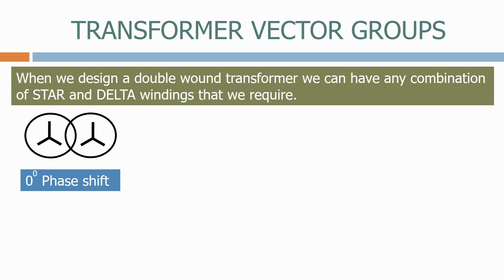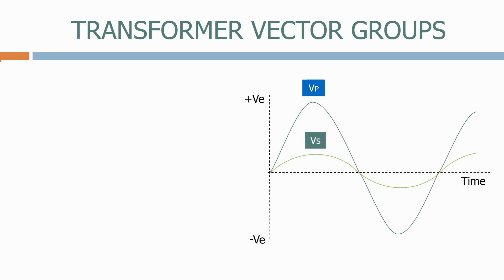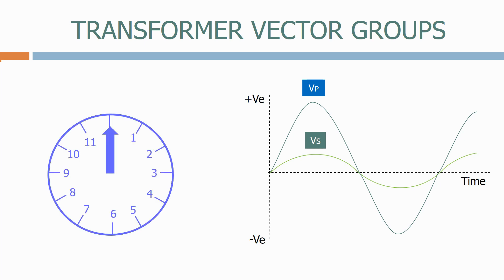A zero-degrees phase shift means that the voltages on the primary and secondary windings are both in phase, and there's been no phase shift from the primary to the secondary winding. A simple way to show the phase shift across the transformer is a clock face, with zero degrees at the top. We then show the phase shift in 30-degree increments.